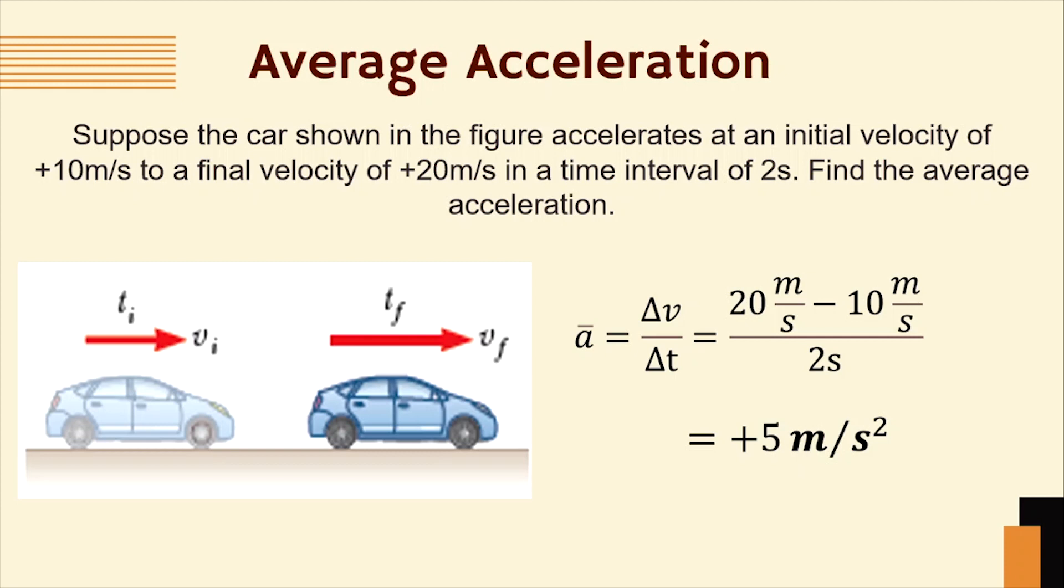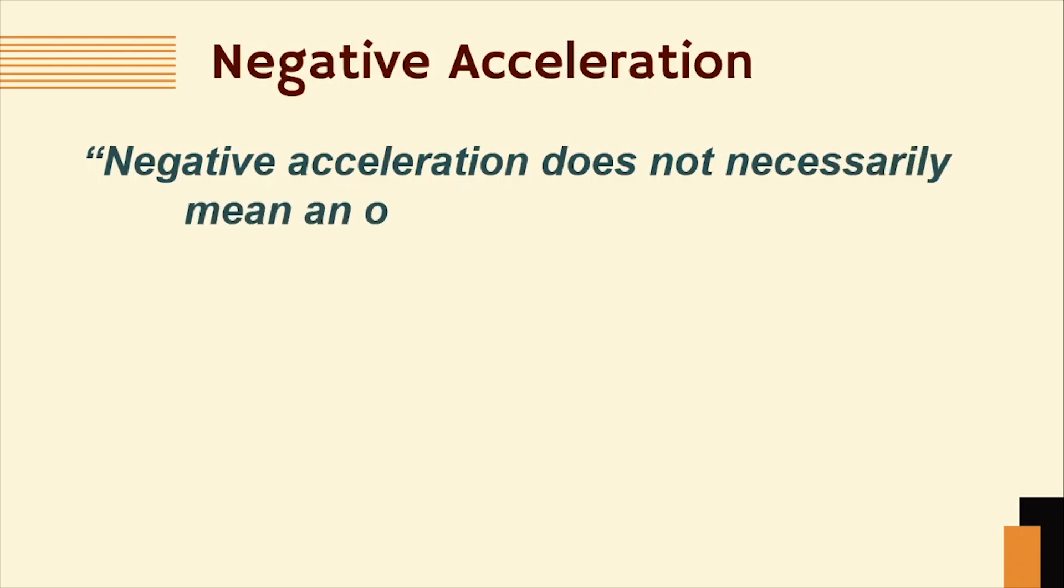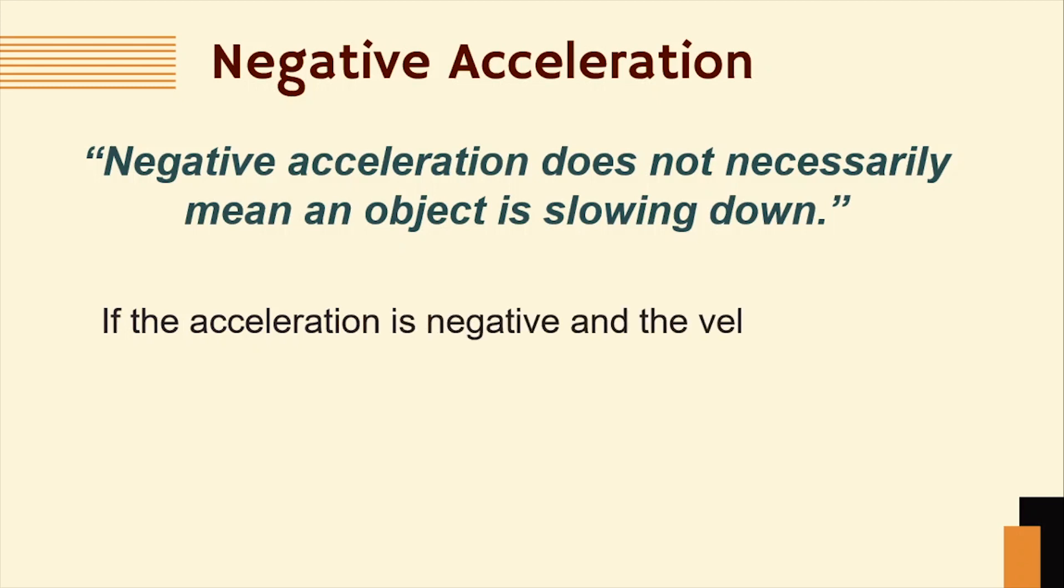The answer is positive, which means the car moves to the right or east. If we have a positive acceleration, then we can also have a negative acceleration. Negative acceleration does not necessarily mean an object is slowing down. If the acceleration is negative and the velocity is also negative, the object is speeding up.